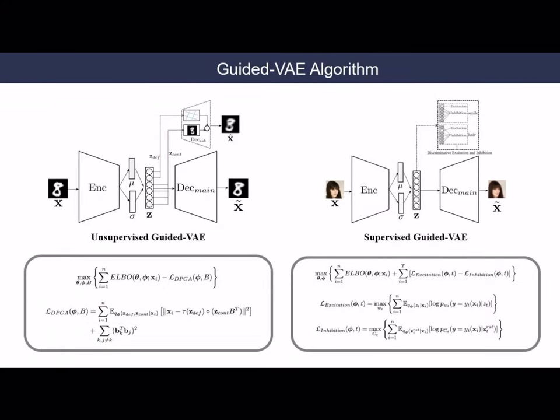In unsupervised setting, we introduce deformable PCA as a subtask, guiding latent variables to represent geometry information separate from content information. In supervised setting, we introduce an excitation-inhibition mechanism to encourage disentanglement for each labeled attributes.